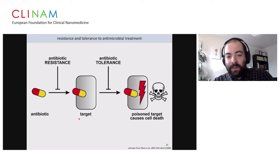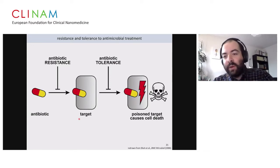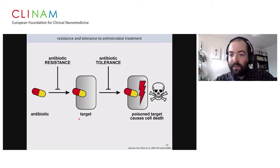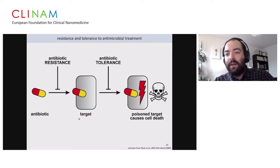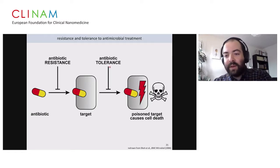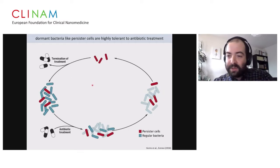Antibiotic tolerance typically involves a dormancy or low-energy physiology of the bacteria, which shuts down the targets that could be poisoned. It's like riding a bike very fast — if somebody throws a stick in your wheel, you crash badly. But if you're moving slowly or not at all, not much will happen. Antibiotic tolerance is relevant because it's the way persister cells survive antibiotic treatment.